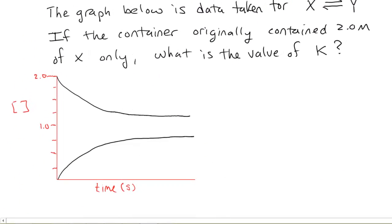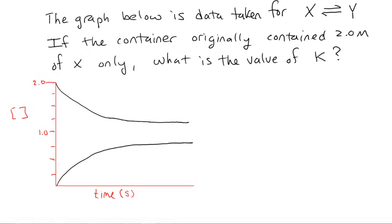So, one last chance to take a look at this and see if we understand what's going on. This graph below is taken for some generic reaction X goes to Y. And the container originally contained 2 molar of X only. So, what's the value of the equilibrium constant? So, here we're going to learn how did this come about if you look at it in the graph. And the first thing we have to do is say, well, what's the equilibrium expression going to be? Well, it's going to be K is equal to the concentration of Y divided by the concentration of X.